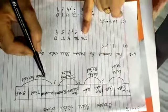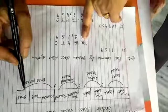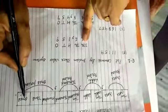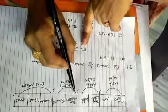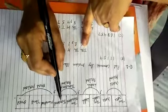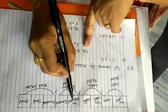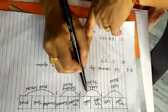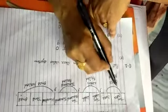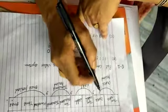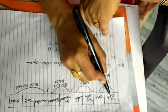Each place belongs to a period. The ones period has three places: ones, tens, hundreds. The thousands period has two places: thousands and ten thousands. The lakh period has two places: lakh and ten lakh. The crore period has two places: crore and ten crore.